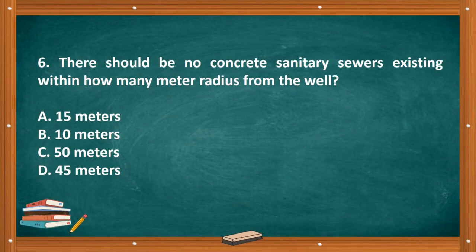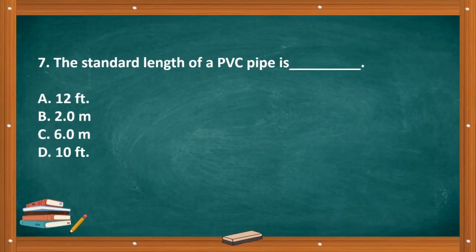Question number six: There should be no concrete sanitary sewers existing within how many meters? A. 15 meters, B. 10 meters, C. 50 meters, D. 45 meters. The correct answer is letter A, 15 meters.